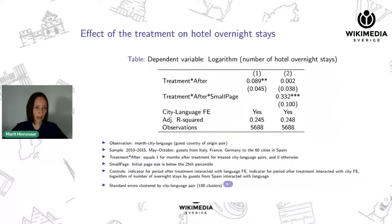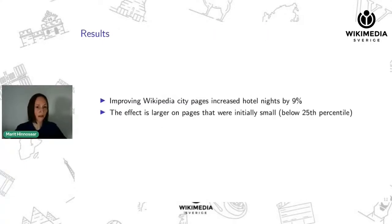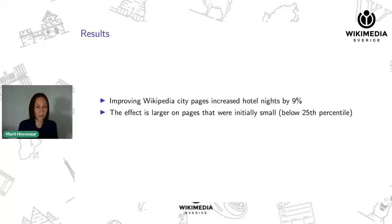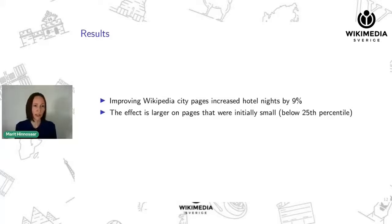Now let us look at our results — what actually happens with overnight stays. These are our regression results. What we found was that our treatment increased the number of hotel nights by tourists by about 9%. This effect was larger on pages that were initially small — it was mostly concentrated on those pages.